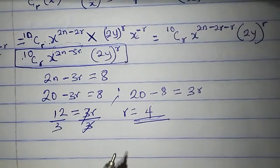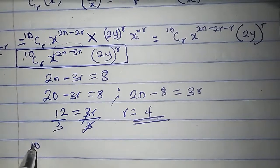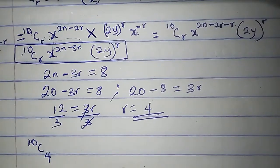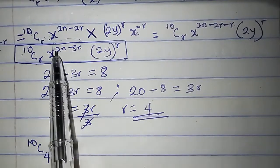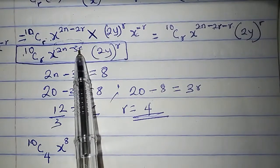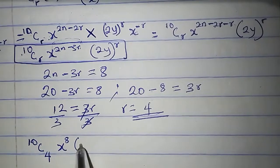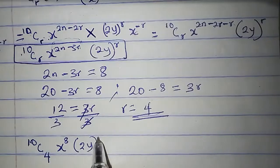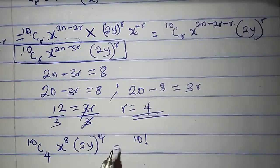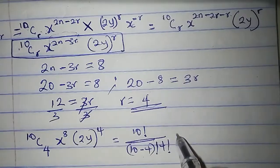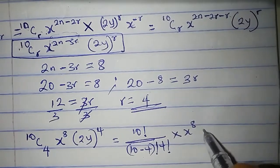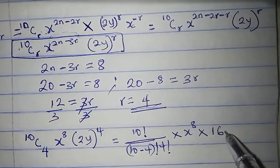That means this will be 10 combination 4. You have your r, then x raised to the power of 8. If you put 10 for n and 4 for r, we'll get 8 here: 2 times 10 is 20, 3 times 4 is 12, 20 minus 12 is 8. Times 2y raised to the power of r, and r is 4. What is 10 combination 4? We'll have 10 factorial over (10 minus 4) factorial times 4 factorial, times x raised to the power of 8, times 2 raised to the power of 4, which is 16, times y raised to the power of 4.